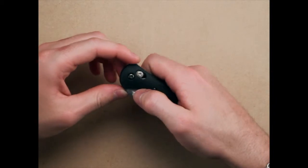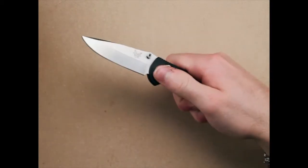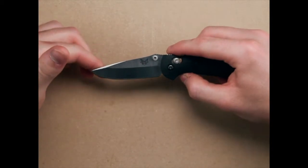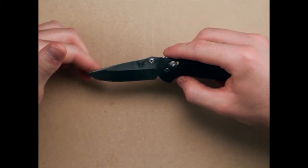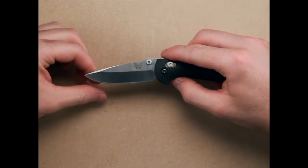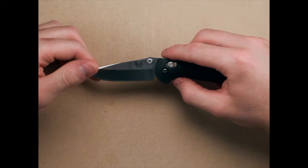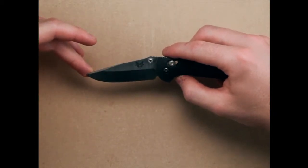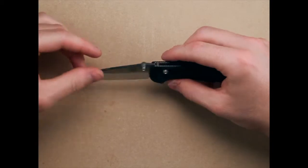You can deploy it with the thumb stud. It just flips right out. You've got a modified drop point blade made out of 154CM. It's a great steel. I've had quite good luck with it and found that it holds an edge quite well. The blade length is 2.91 inches, which is about what I like for my EDC blades.